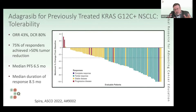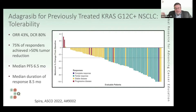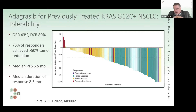Adagrasib is another selective KRAS inhibitor that works against G12C. What we saw at ASCO and was published simultaneously in the New England Journal of Medicine were the results with this other oral inhibitor of KRAS for patients with this G12C mutation. This was in previously treated patients — about 80 percent had received a couple of lines of therapy, having gotten chemo and immunotherapy, and most had gotten two or three lines.